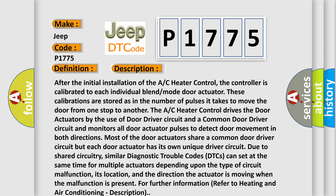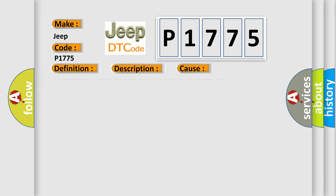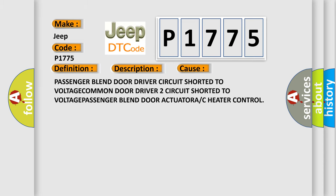When the malfunction is present, for further information refer to heating and air conditioning description. This diagnostic error occurs most often in these cases: passenger blend door driver circuit shorted to voltage, common door driver 2 circuit shorted to voltage, or passenger blend door actuator A or C heater control fault.